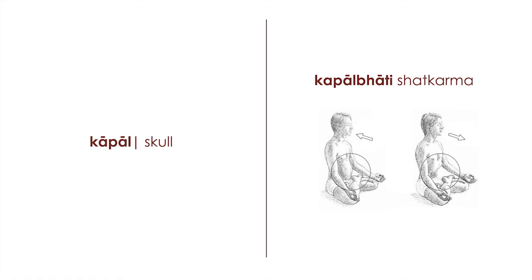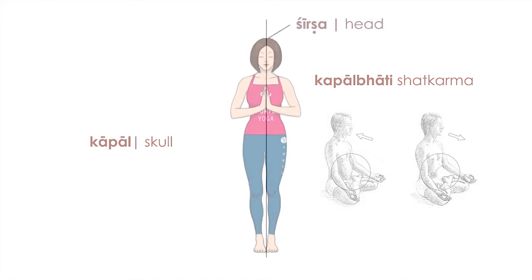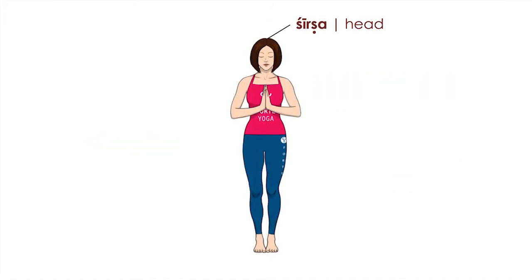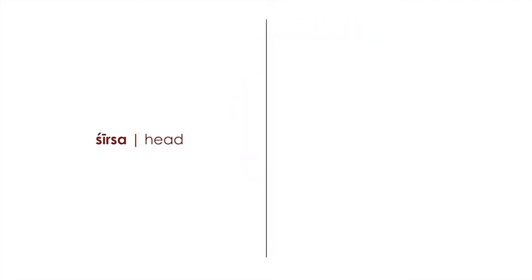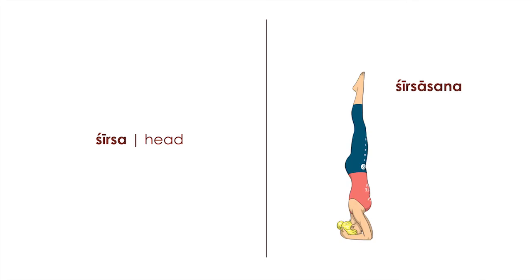The last body part is Shirsha, meaning head. This word has two distinct sounds: first 'shh' and then 'sha' — Shirsha. An example is Shirshasana, the headstand pose: Shirsha is head and asana is posture.